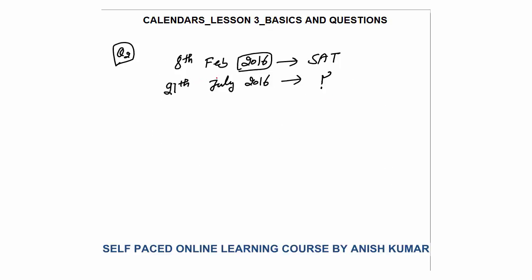Question 2: 8th February 2016 is Saturday. What will be the day on 21st July 2016? Now this is a leap year — 2016 is a leap year. So how many days in February are left? 29 days total, so after 8th February I have 21 days remaining.